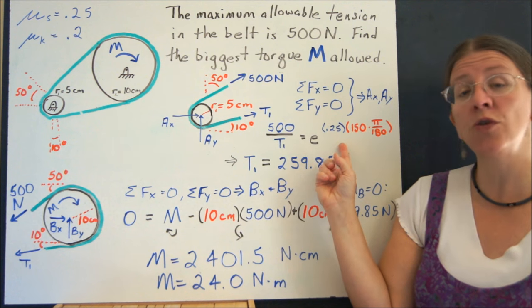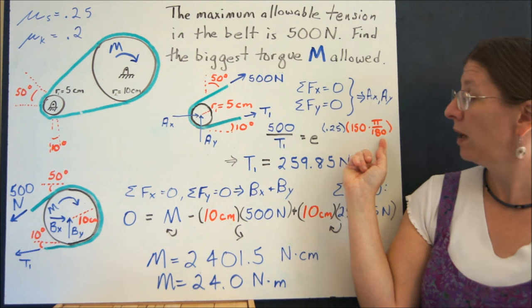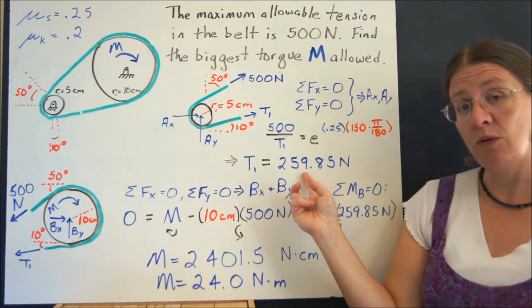So that's our extra formula for belts. And notice I've changed my 150 degrees into radians. So once you've got that, you can solve for T1.